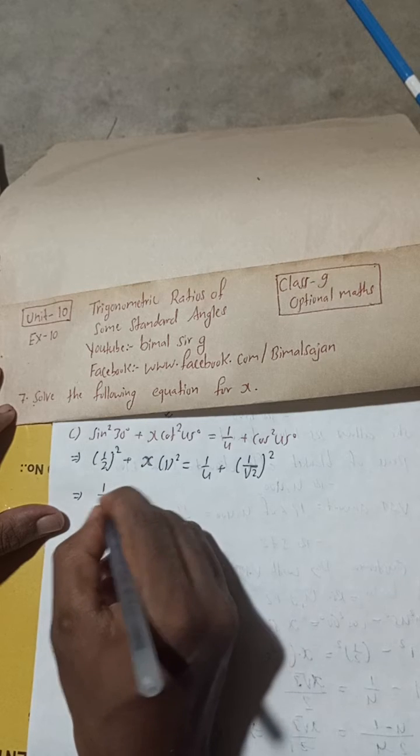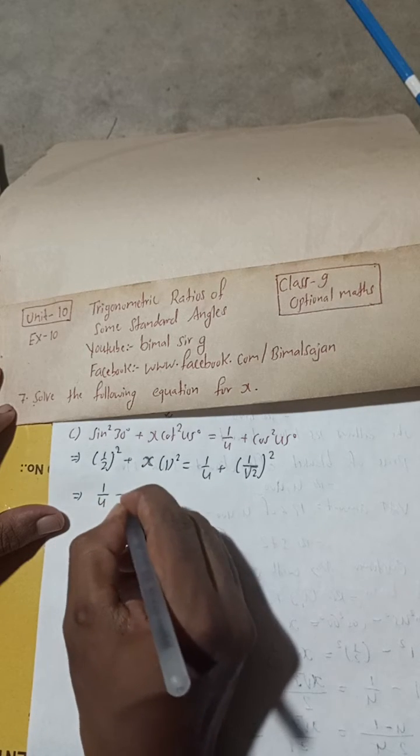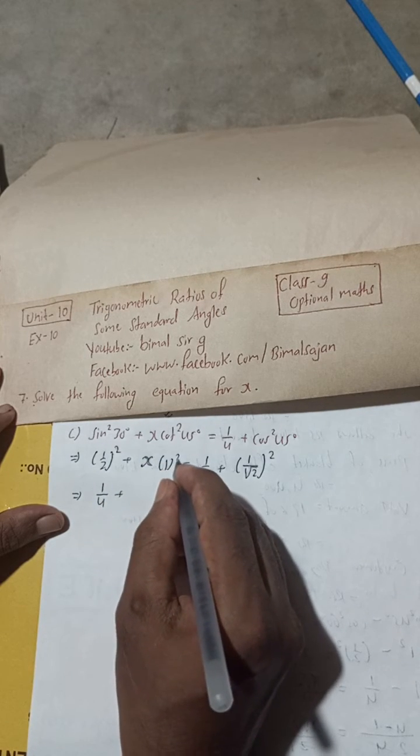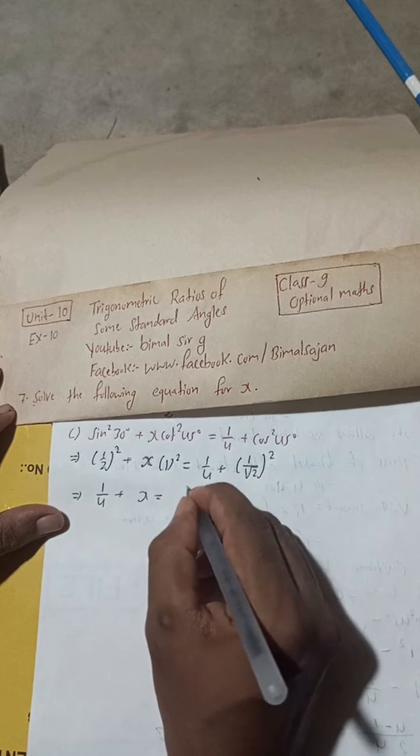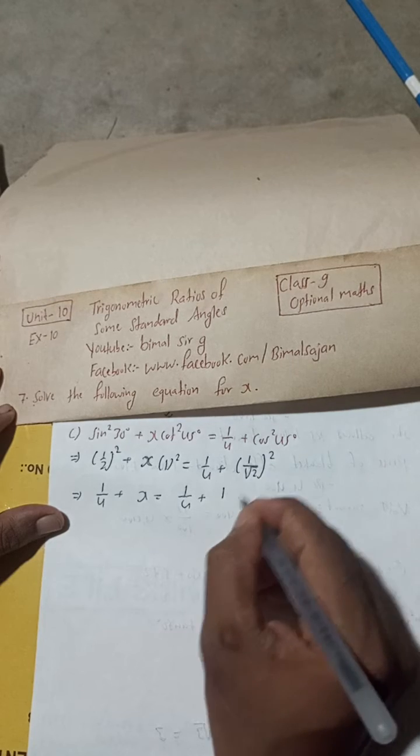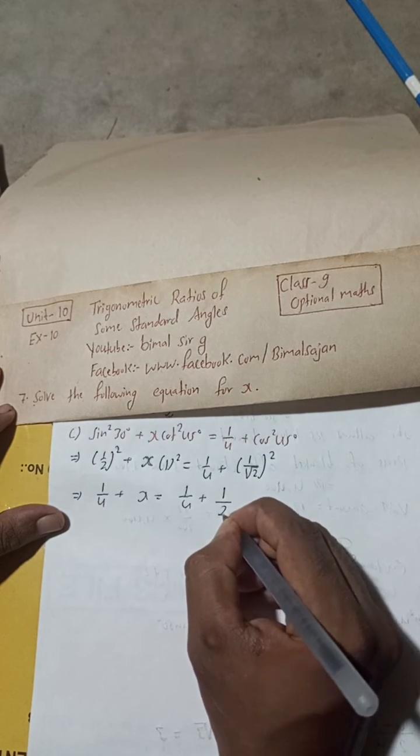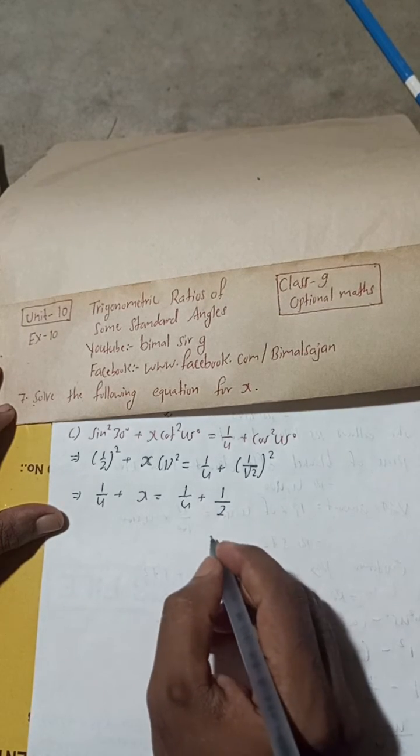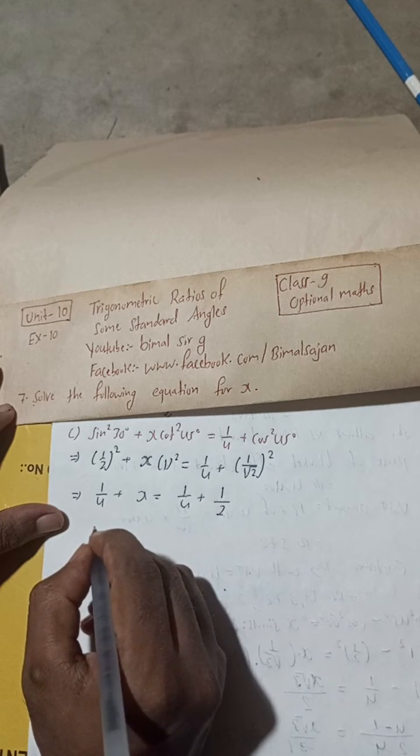Now, 1 square is 1 and 2 square is 2 to 4 plus. This is 1 square is 1, 1 into x is x only. So this is 1 by 4 plus, 1 square is 1 and root 2 square is 2. Now, from here, what you can do now here?